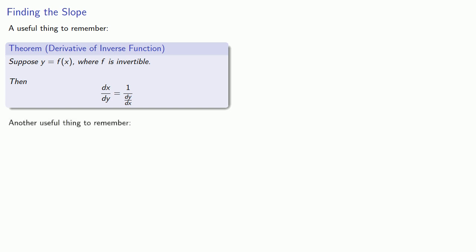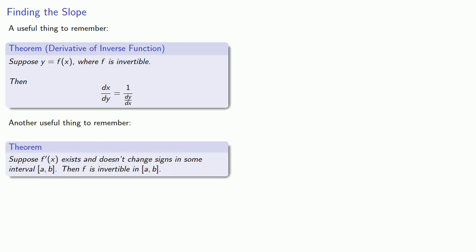So another useful thing to remember is that suppose the derivative exists and doesn't change signs in some interval between a and b, then our function is invertible in that interval. And since for most functions the sign changes only occur at discrete points, this means that in general we won't have to worry about whether the inverse function exists, because it will exist almost everywhere.